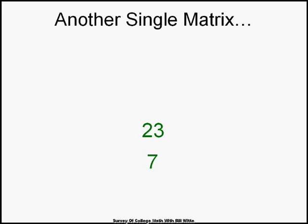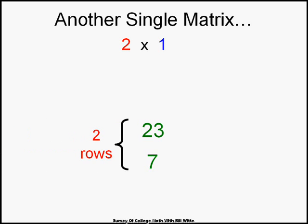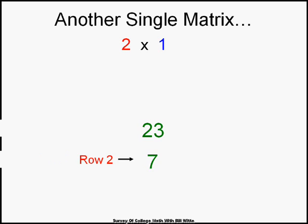Here's another single matrix — looks a little weird but it's still a single matrix. This one would be a two by one, and we will be using these that look like this, believe it or not. As you can see, it has two rows — we start counting at the top and work our way down: row one and row two — and of course it has one column, working from left to right.